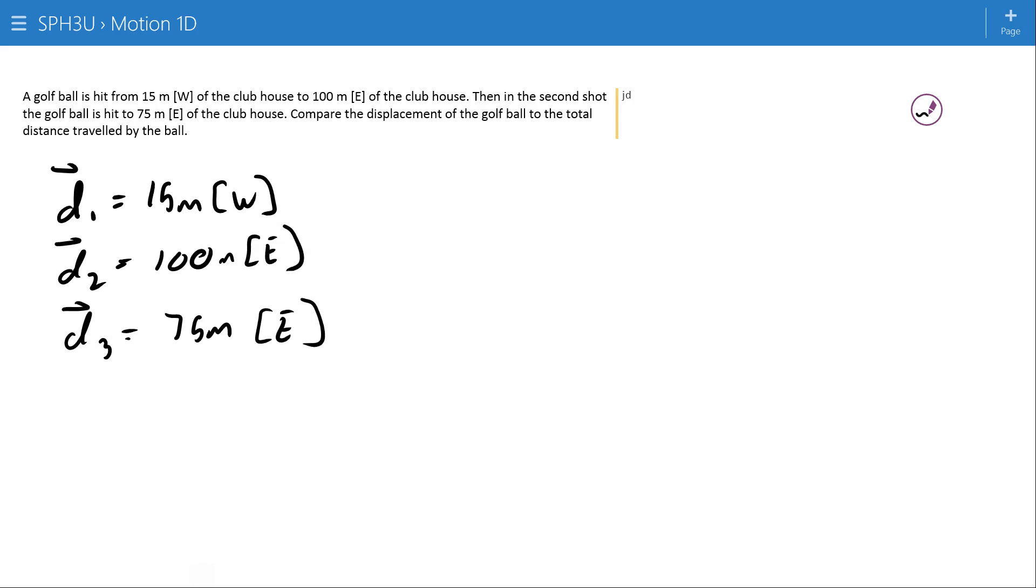All have size and direction so they're all vectors. If I want to make a scale diagram of this situation, let's just put the clubhouse right here. And the golf ball is going to start a little bit west of that, specifically 15. Then it's going to, in its initial hit, go all the way over to some location, 100 meters east. And then finally, so this will be D1, this is D2, and then finally it'll come back to D3. And D3 is 75 meters.